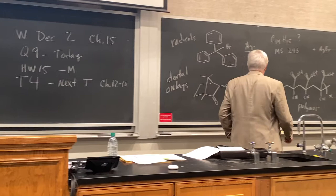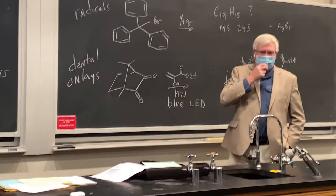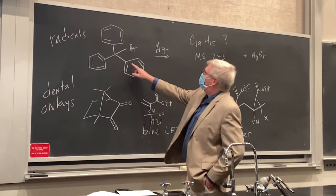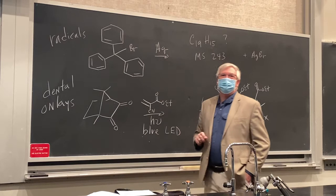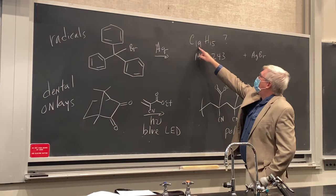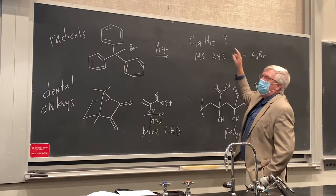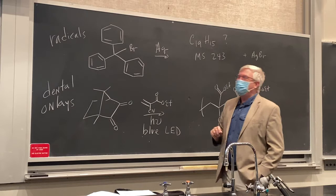Before we jump into Chapter 15, here's something to catch your attention: a reaction run by Moses Gomberg at the University of Michigan about 100 years ago. He took triphenyl methyl bromide and treated it with finely divided silver metal, and he got a strange product — C19H15 with a mass spec of 243. He didn't know what that structure was, and the byproduct was silver bromide.